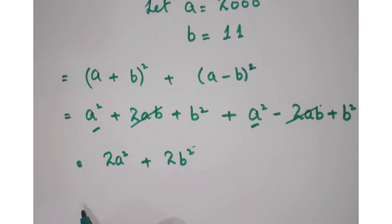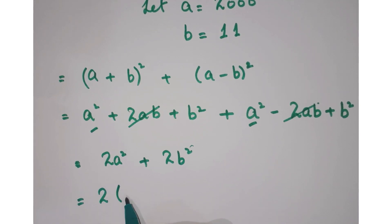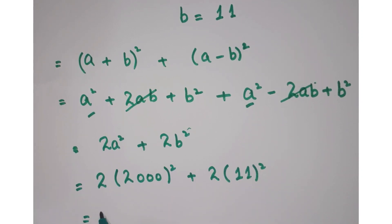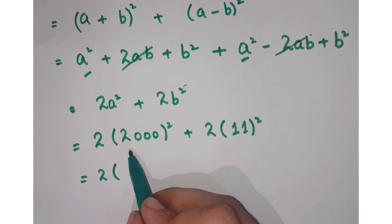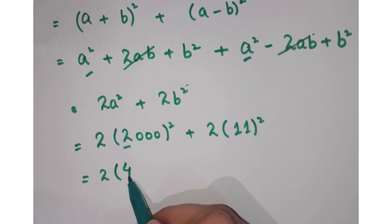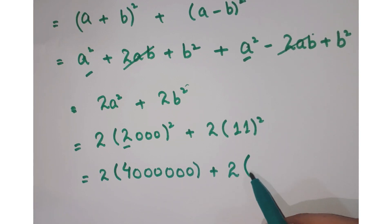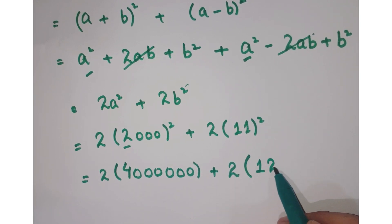Now let's put the values of a and b. So you can write 2 times 2000 square plus 2 times 11 square. So here this is 2 into 2000. The square of 2 is 4. Now look at, there are 3 zeros, so when you square them you will get 6 zeros. Plus 2 and the square of 11 is 121.